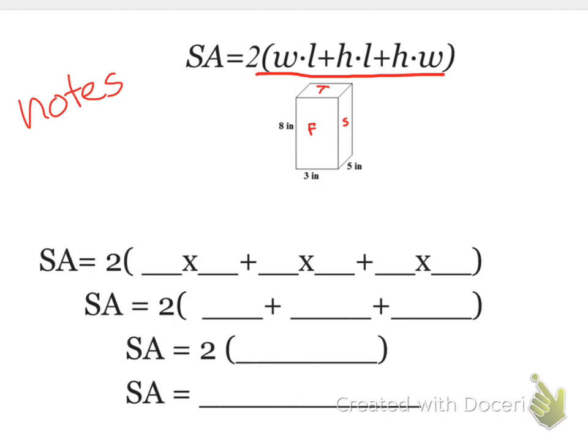So here's how it works. We have the surface area of a box is equal to the width times the length, plus the height times the length, plus the height times the width, times 2.